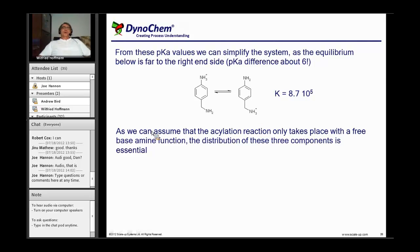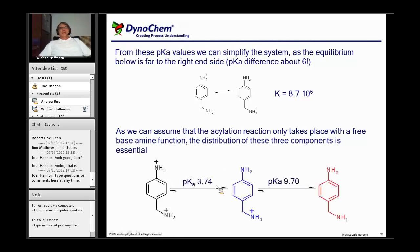With the free electron pairs, that is important because we can assume that only the free nitrogen with the free electron pairs can attack the carbonyl of the acetic anhydride to form the product. As soon as the nitrogen is protonated, no reaction can occur at that site. So what's important is we need to understand the distribution of these species as a function of pH.